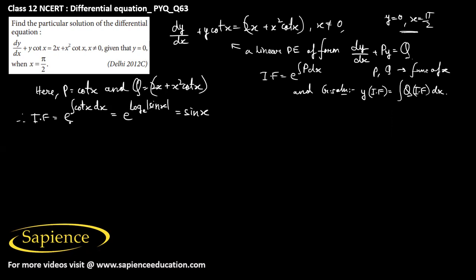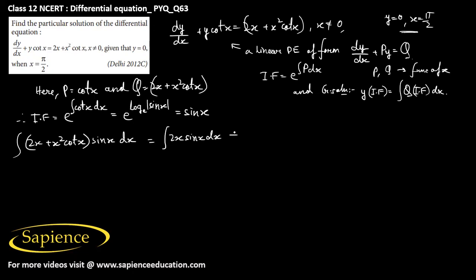The integral of Q times the integrating factor dx is the integral of (2x + x²·cot(x))·sin(x) dx. This can be split as the integral of 2x·sin(x) dx plus the integral of x²·cot(x)·sin(x) dx. Since cot(x)·sin(x) = cos(x), the second integral becomes the integral of x²·cos(x) dx.